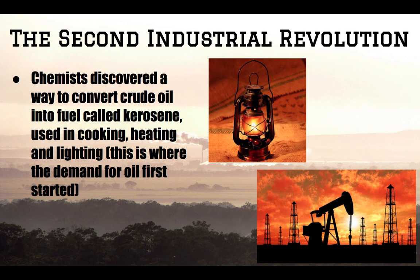Some other inventions during the second Industrial Revolution: chemists invented a way to convert oil into fuel called kerosene, which is going to be used in cooking, heating, and lighting. This is where the demand for oil first starts — before this, oil wasn't used very much at all. And then obviously, as we know, oil is going to lead to another important change related to cars. It was also discovered that it's very easy to pump oil from the ground, so people began drilling all over trying to find deposits of oil, knowing they could use it for cooking, heating, and lighting.